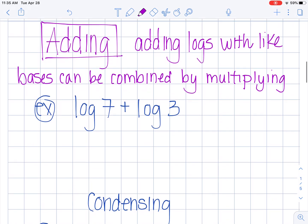The next property of logarithms is when you're adding logarithms together. If I have logarithms with like bases, which means these numbers right here have to be the same, I can combine them together by multiplying. So log of 7 plus log of 3 is equal to the log of 7 times 3. And you would actually multiply that out, so you would write this as the log of 21.